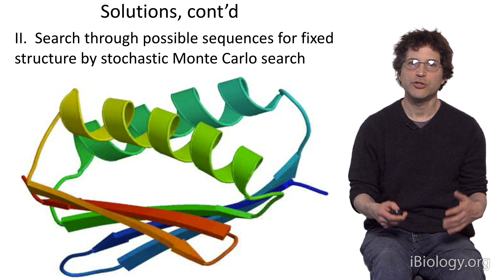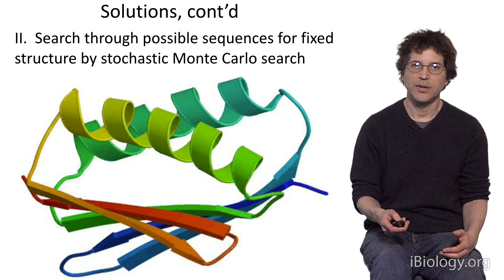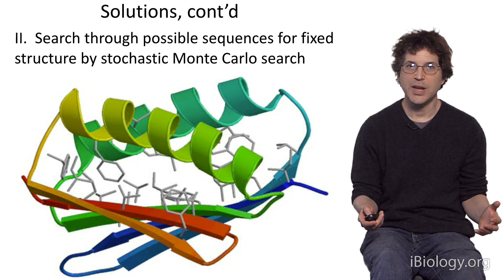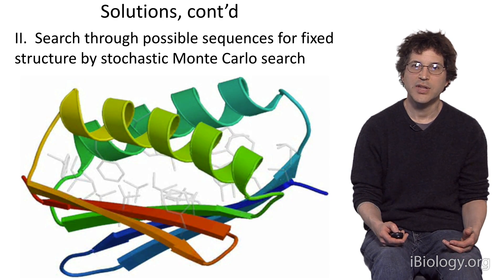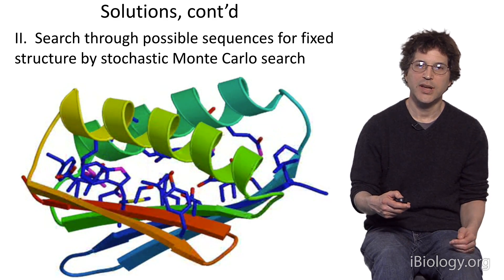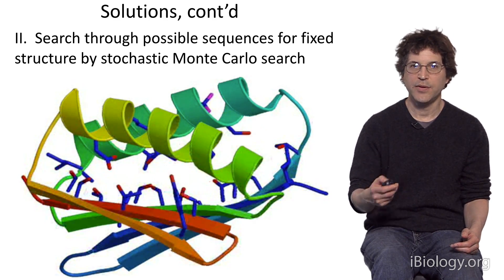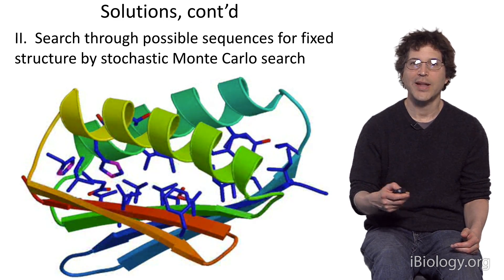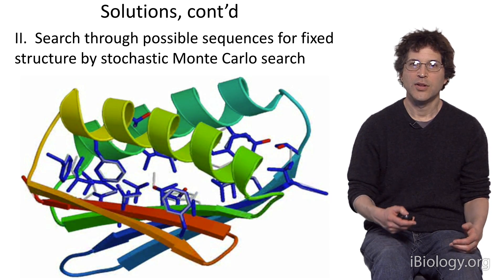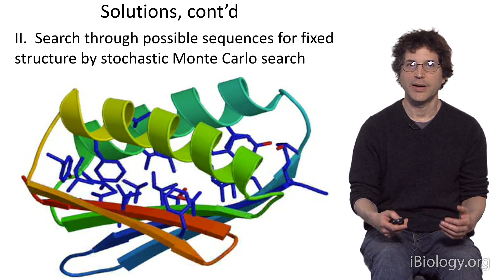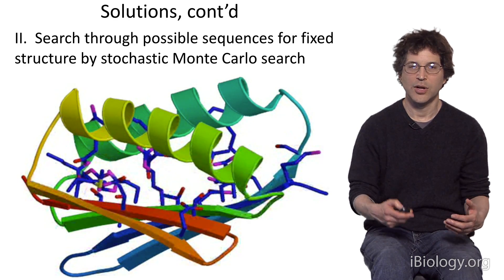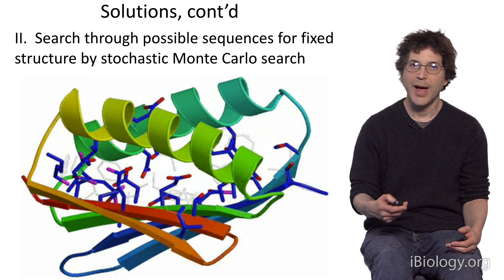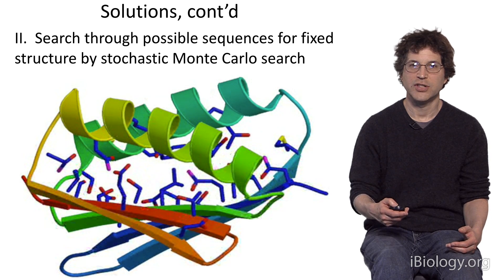The second problem — searching through the space of sequences — is handled as shown in this animation. Starting with a protein backbone for which we want to find a very low energy sequence, we carry out a calculation in which, at each step, we're randomly substituting in a different amino acid identity and different side-chain conformation at a randomly selected position. We evaluate the energy and accept the change if the energy got lower. In this way, we can scan through a very large number of possible sequences and quite rapidly identify the lowest energy sequence for a structure.